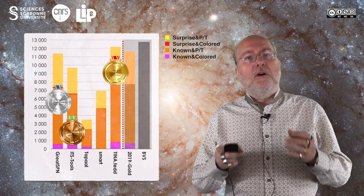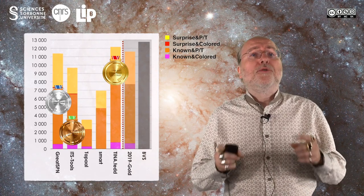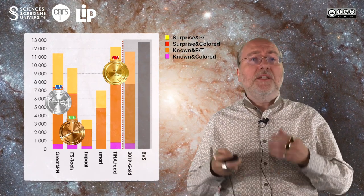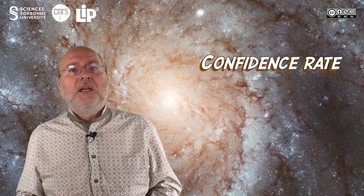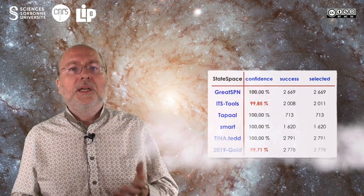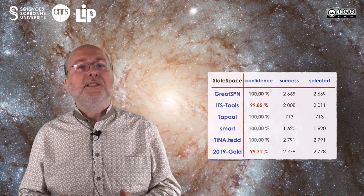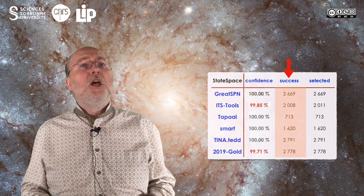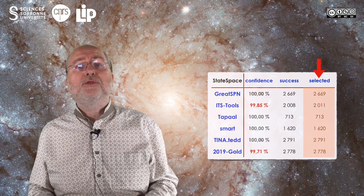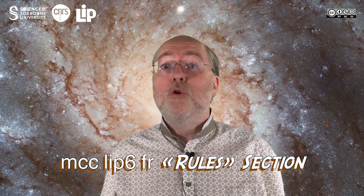Let me introduce BVS — Best Virtual Score — a pseudo tool for which we collect, for each examination and all 1,229 model instances, the best score among the participating tools. The objective is to have a rough idea of how far from a realistic objective the tools are. In this case, BVS is a bit better than TINA-TED this year. Let us also introduce the notion of confidence rate, computed using a subset of trusted values. Confidence rates for tools are very high, with the updated 2020 version reaching 100%.